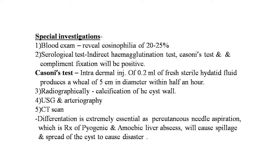Special investigations for hydatid cysts of the liver: blood examination reveals eosinophilia of 20 to 25 percent. Serological tests — indirect hemagglutination test, Casoni's test, and complement fixation test — will be positive. Casoni's test involves intradermal injection of 0.2 ml of fresh sterile hydatid fluid, which produces a wheal of five centimeters in diameter within half an hour. Radiography may show calcification of the cyst wall; ultrasound, arteriography, and CT scan are also performed.